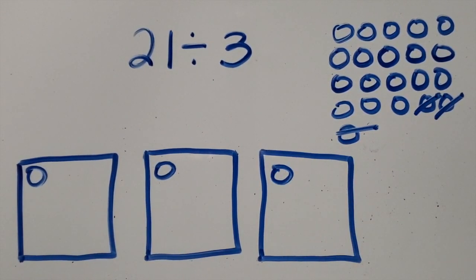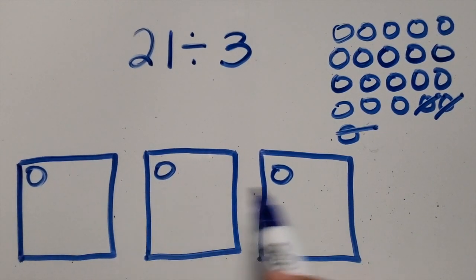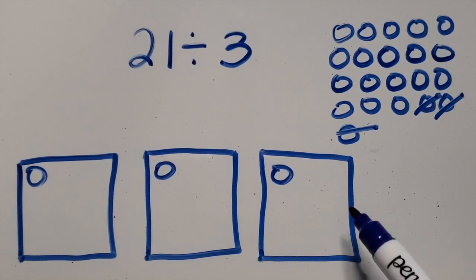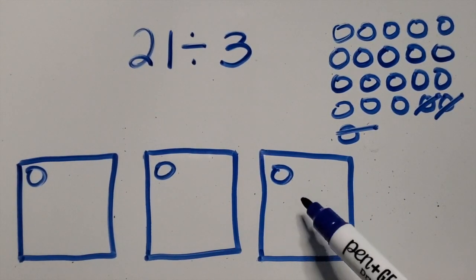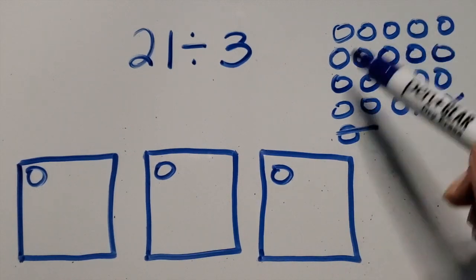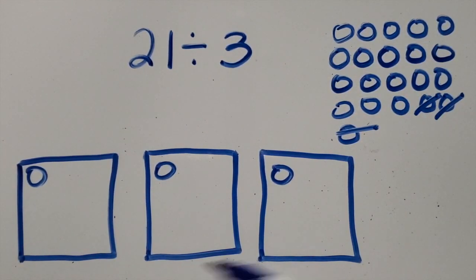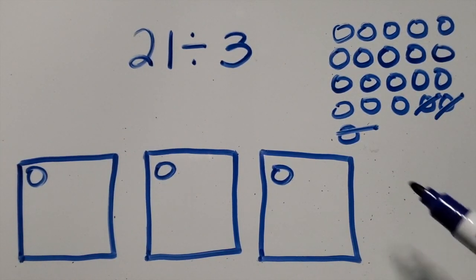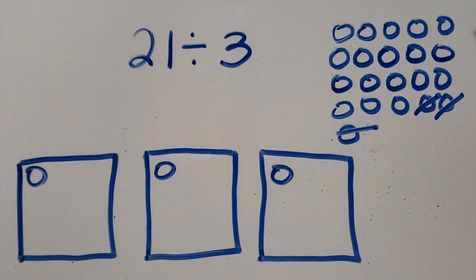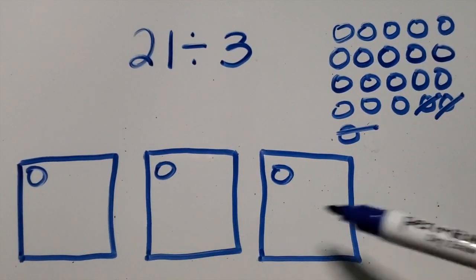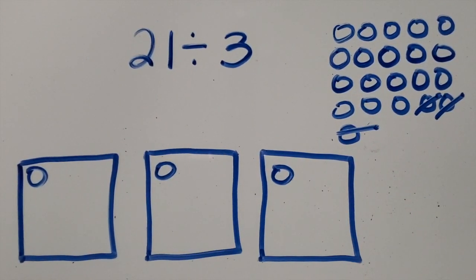When first starting out this strategy, I want students to pause and think: each of my groups has an equal number. Is there enough left of the objects so that they can get more? So yes, there's enough so that each group can get more of the same amount.